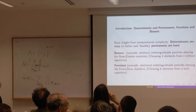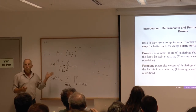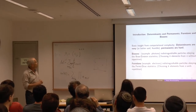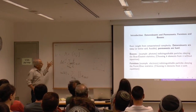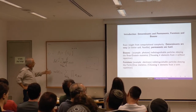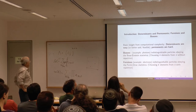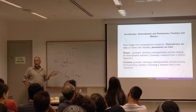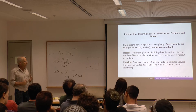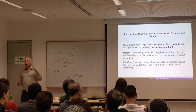Miraculously, determinants are fairly easy to compute. You don't need n factorial computations; you can use Gaussian elimination and compute the determinant in polynomial time, something like n cubed. The permanent, on the other hand, is notoriously difficult to compute.